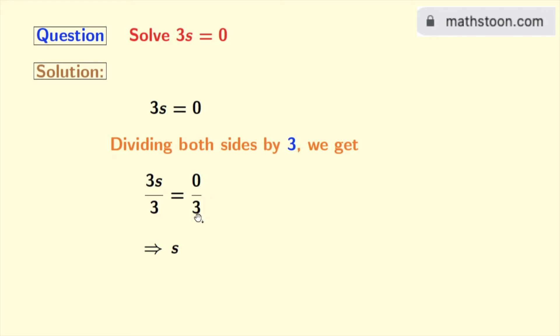Now we all know that if we divide 0 by any number, then the result will be 0. So we have s equals 0, and this is our final answer.